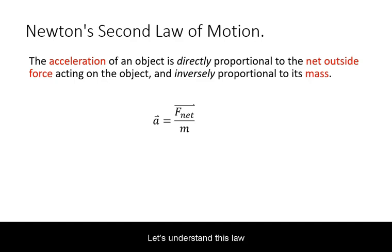Let's understand this law for each of its variables. Recall that acceleration is the rate of change of velocity with time. According to Newton's second law, it can be written as a equals F net divided by m.